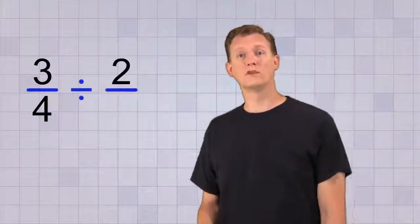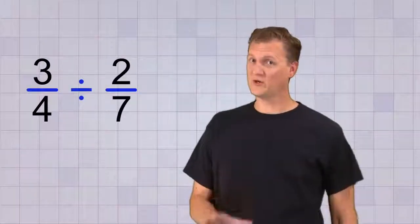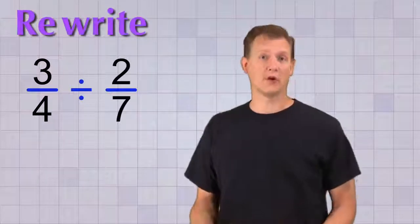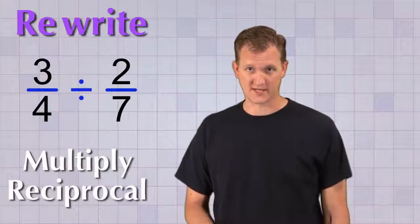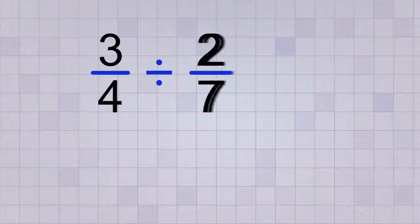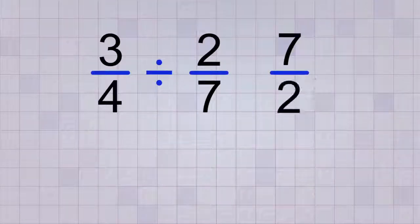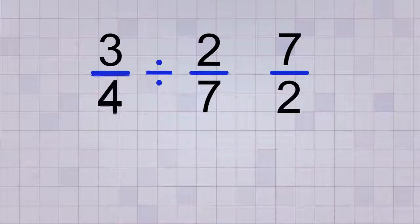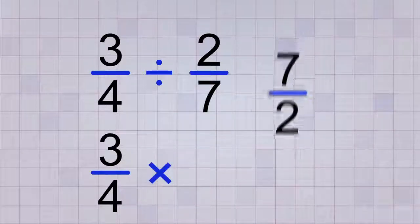Let's try this problem: 3 over 4 divided by 2 over 7. Okay, so the first thing we want to do is rewrite our problem. Instead of dividing by 2 over 7, we can multiply by the reciprocal instead. The reciprocal of 2 over 7 is 7 over 2. So our problem becomes 3 over 4 times 7 over 2.